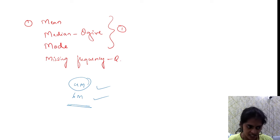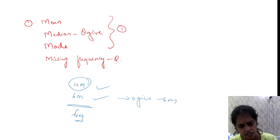In 6 mark questions, you'll either be finding mean, median, mode, or ogive. Sometimes, the question will involve missing frequency. Missing frequency is also a common question type.